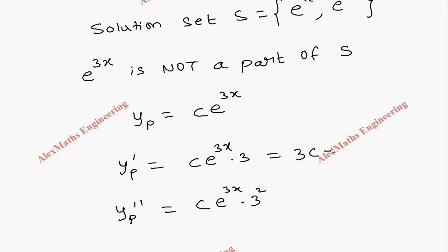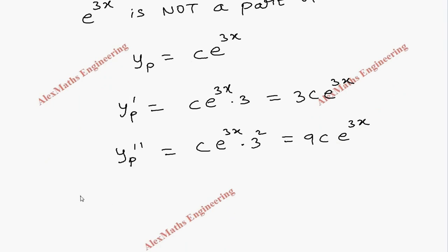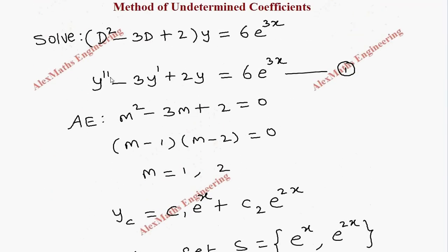And one more derivative: 3ce^3x · 3, so this is 9ce^3x.